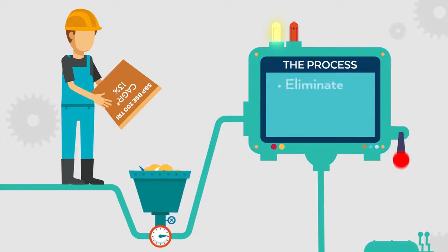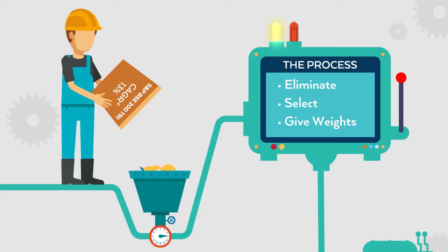Step 1 eliminates long-term detractors of alpha. Step 2 selects durable sources of alpha. And Step 3 assigns weights to achieve effective risk management.